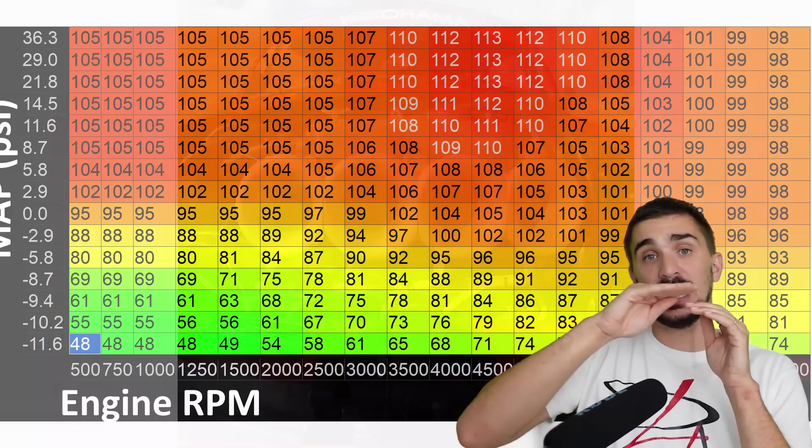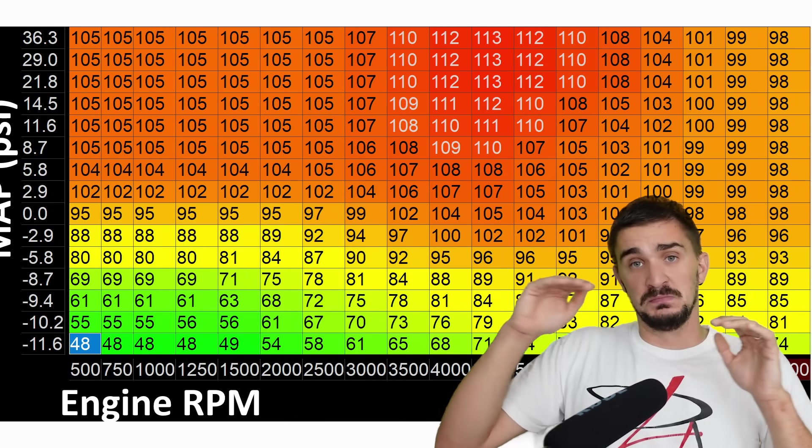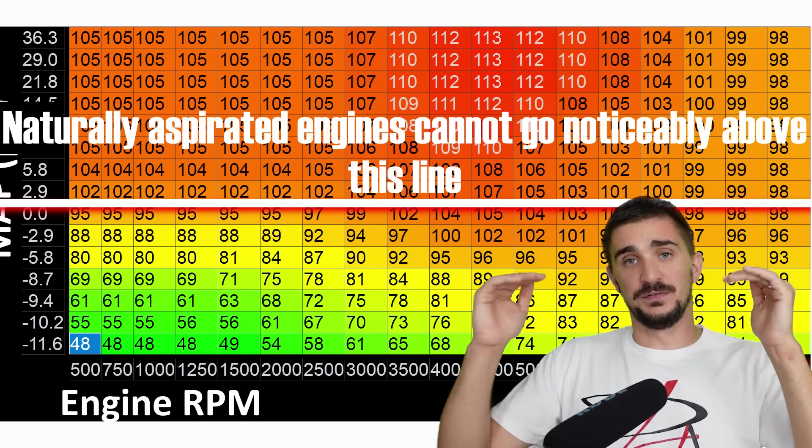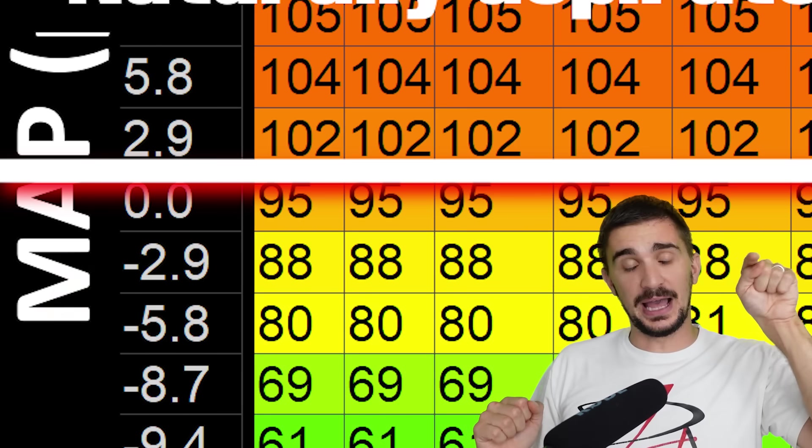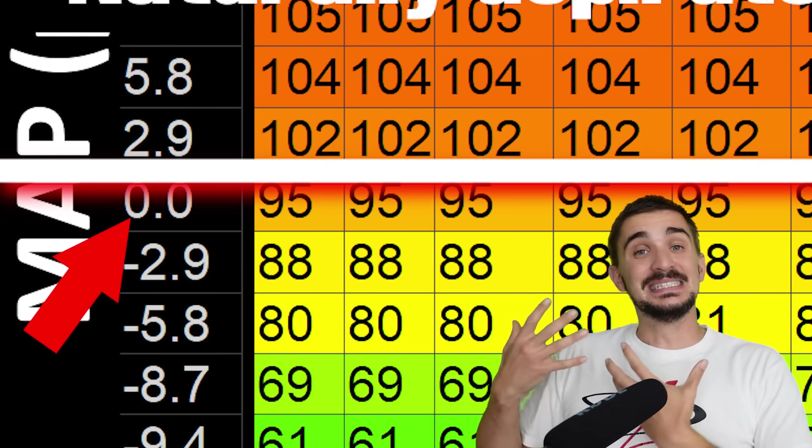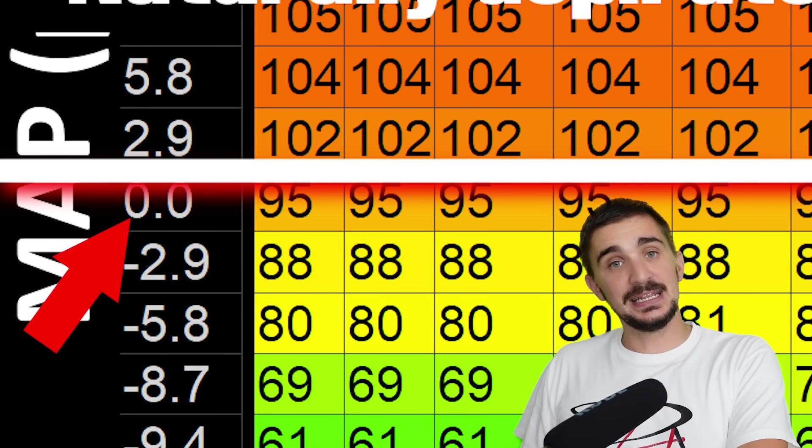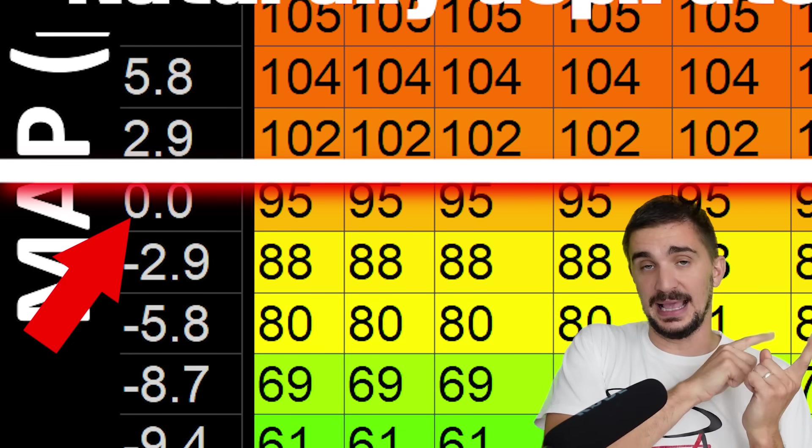And that's why a naturally aspirated engine is going to be limited to about this part of the VE map. And this zero at this part tells us that there's zero difference between air pressure inside the engine and outside the engine in the atmosphere.